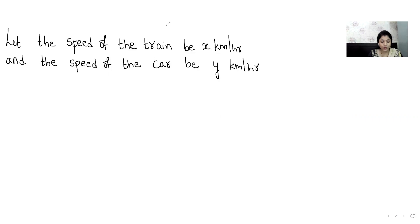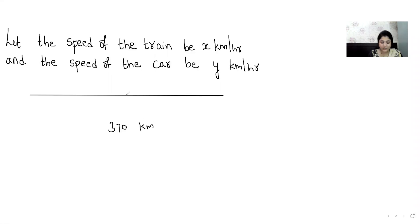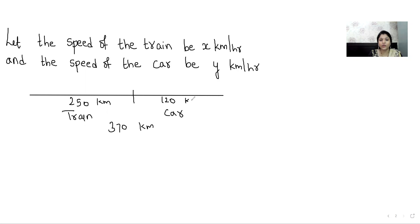Now we will read the condition — we will read the question again step by step. The first line: a man travels 370 kilometers, partly by train and partly by car. So the total distance is 370 kilometers. If he covers 250 kilometers by train and the rest by car, the rest means 370 minus 250, which is 120 kilometers. So it is 250 kilometers by train and 120 kilometers by car, and the total time taken to cover the total distance is 4 hours.